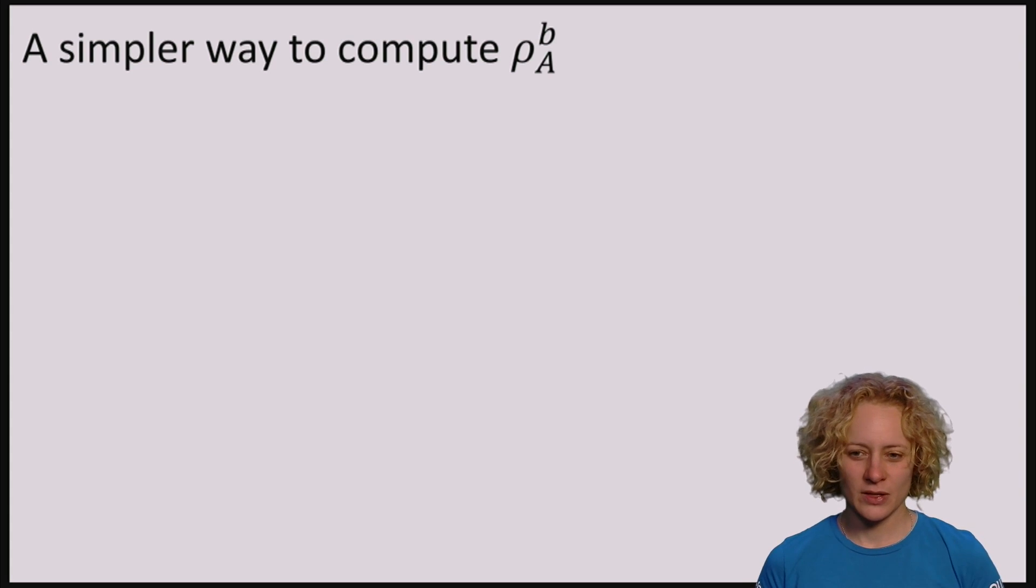So a simpler way to compute the partial trace, sometimes simpler way, if you don't know yet what ρ_AB looks like, is in fact to use the fact that we can describe the partial trace as performing a measurement.